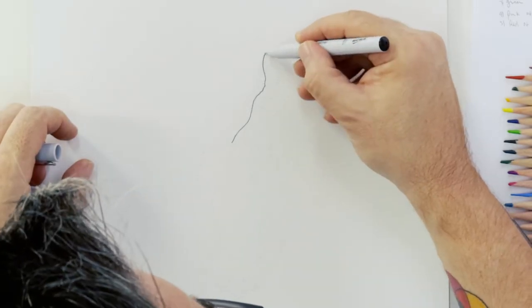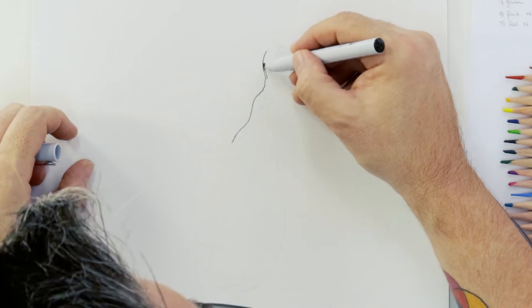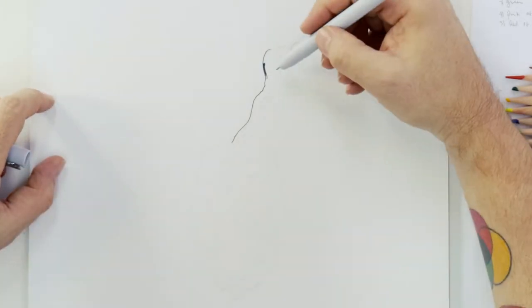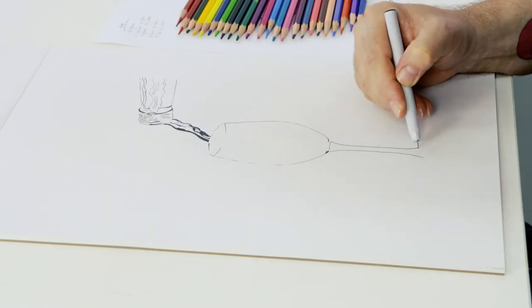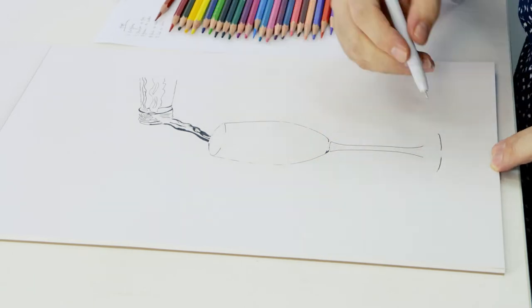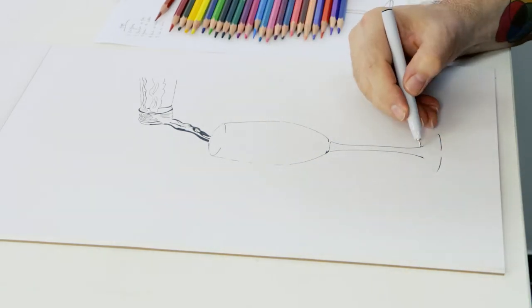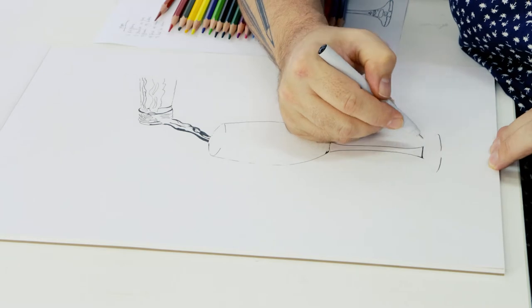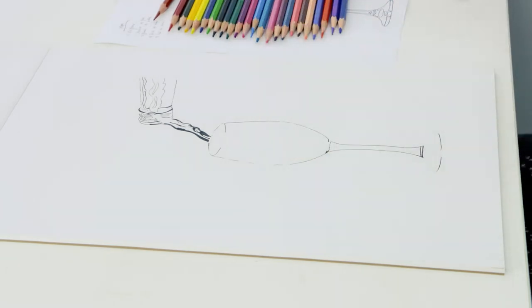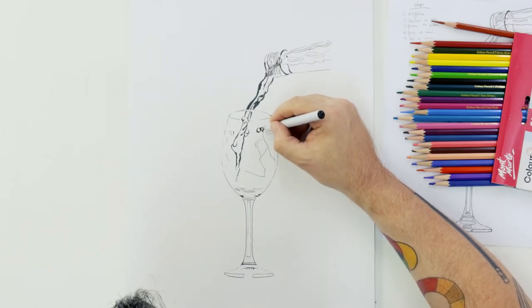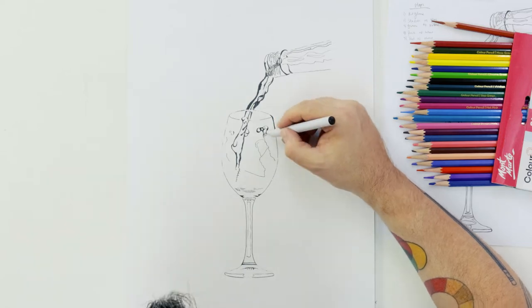Next we refine our drawing and basically relay in all that line work that was transferred with an ink fine liner. We have supplied an image of the finished work on our website that you can refer to for the coloring stage of this project. At this stage we also add in any extra details.